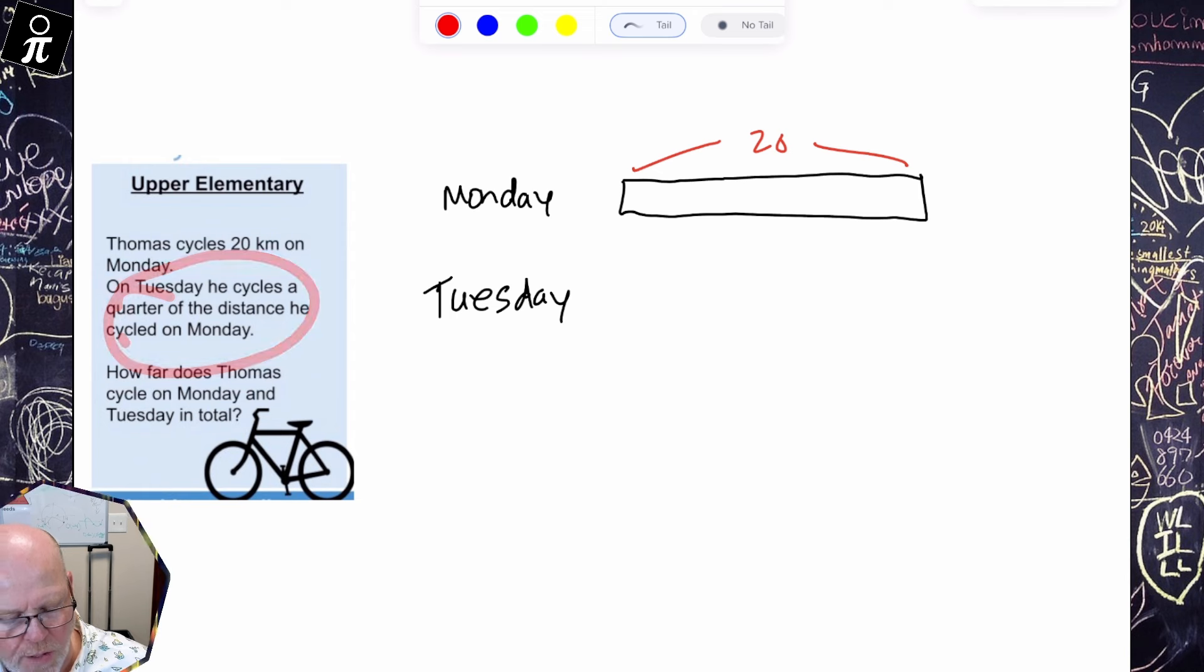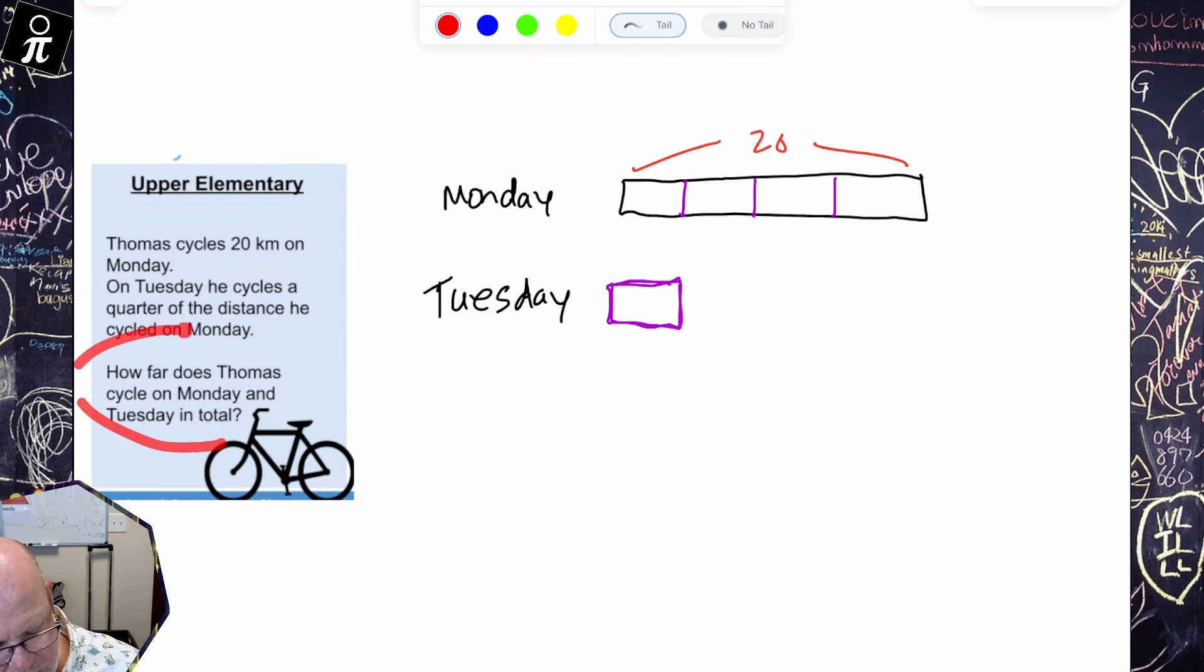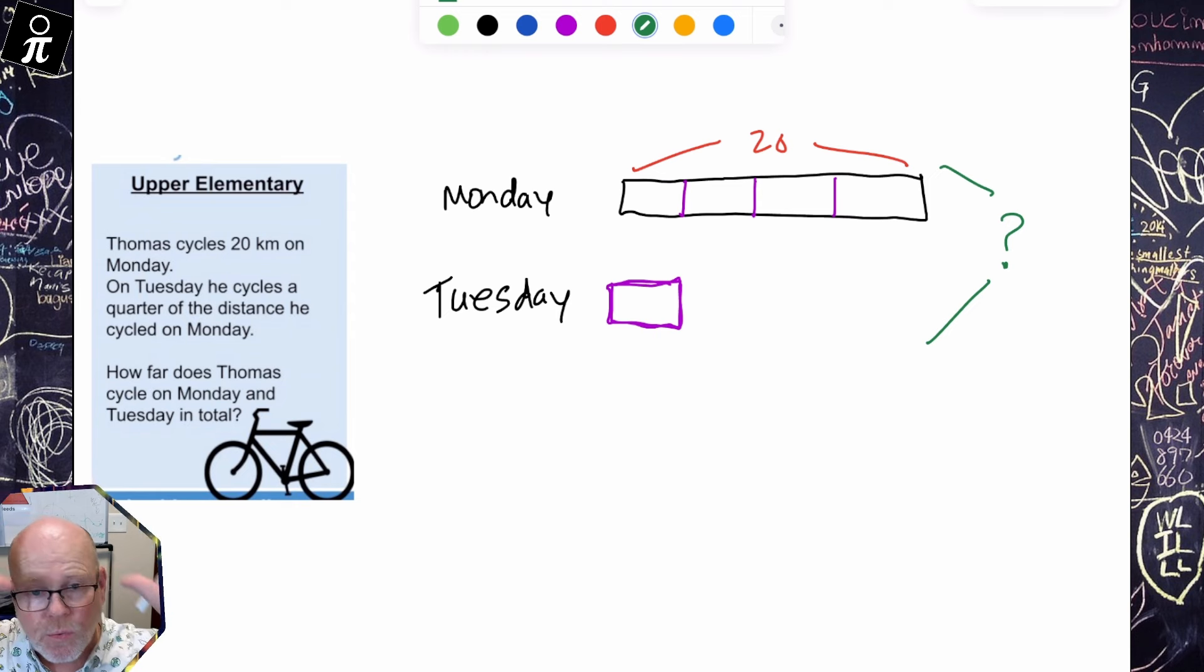It says Thomas cycles 20 kilometers on Monday. So there's my 20 kilometers on Monday right there. Then it says on Tuesday, he cycles a quarter of the distance he cycled on Monday. So what are we gonna do? Well, on Monday, I'm gonna cut it up into four pieces and Tuesday is one of those four pieces right there. So here's my four quarters and Tuesday is one, is the same size as one of those quarters.